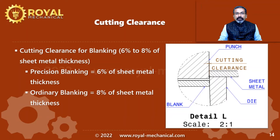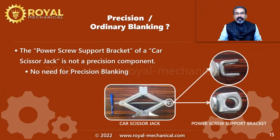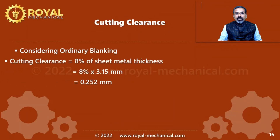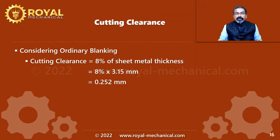For precision blanking we use 6% of the sheet metal thickness, whereas for ordinary blanking we use 8%. We are designing the blanking die for the power screw support bracket of a car scissor jack — this is not a precision component, so we use ordinary blanking clearance: 8% of 3.15 mm, which equals 0.252 mm.